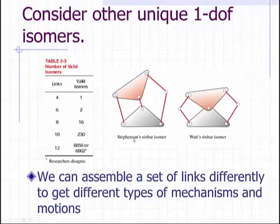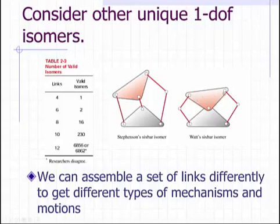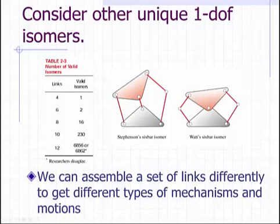The first is called the Stevenson six-bar isomer. It has one, two, three, four binary links and two ternary links. The second is called the Watt six-bar isomer. It has two binary links on the left, two binary links on the right, and two ternary links in the middle. These are the two ways in which six links can be combined to create a one-degree-of-freedom mechanism, and as we increase the number of links available we get many more valid isomers.